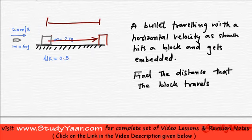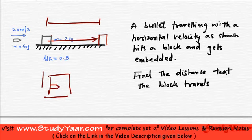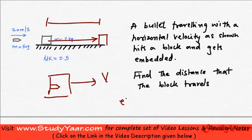It is also given to us that the bullet gets embedded. So after the impact the bullet gets embedded therefore they both travel with a common velocity. It is essentially a plastic collision, a completely plastic kind of an impact.